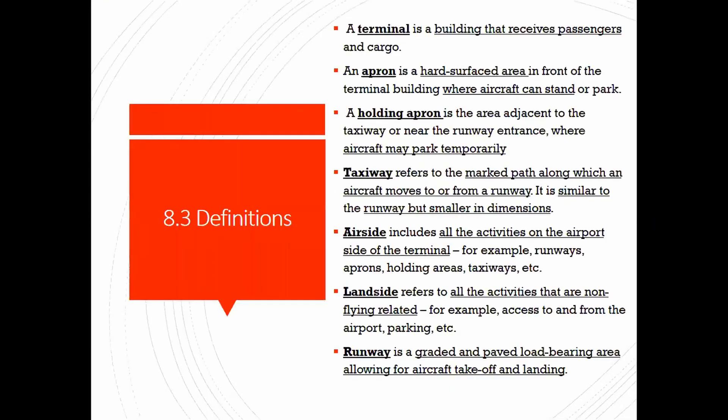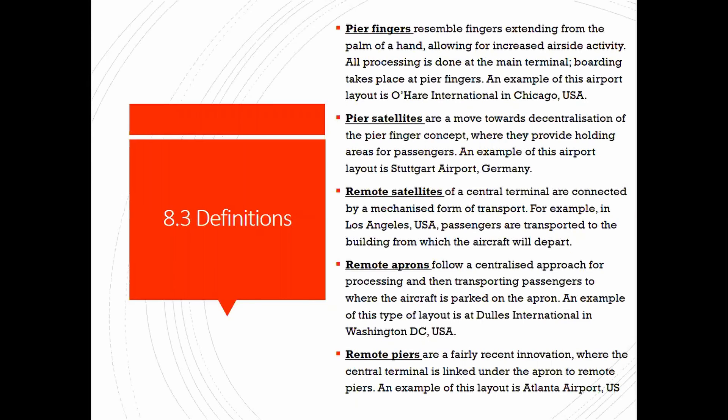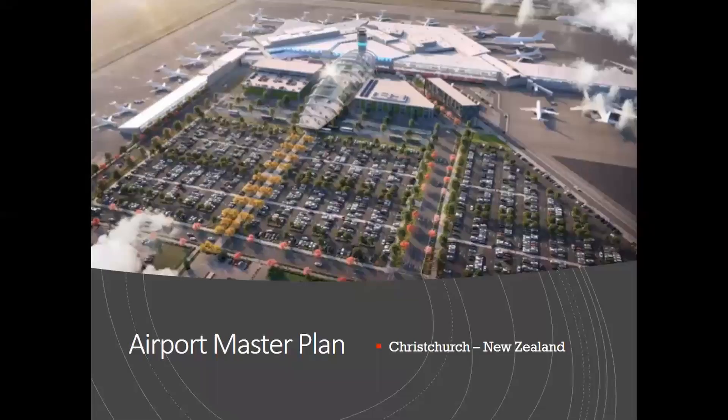First, the definitions: the terminal is the building that receives passengers. The apron is a hard-surfaced area where aircraft stand or park. A holding area is a temporary parking area for aircraft. You get a taxiway, an air side — which is basically all the air-side development of an airport — and the land side, which covers all the land development things like parking and buildings. Then there's the runway, where planes take off and land. Other terms you may encounter include pier fingers, pier satellites, remote satellites, remote aprons, and remote piers.